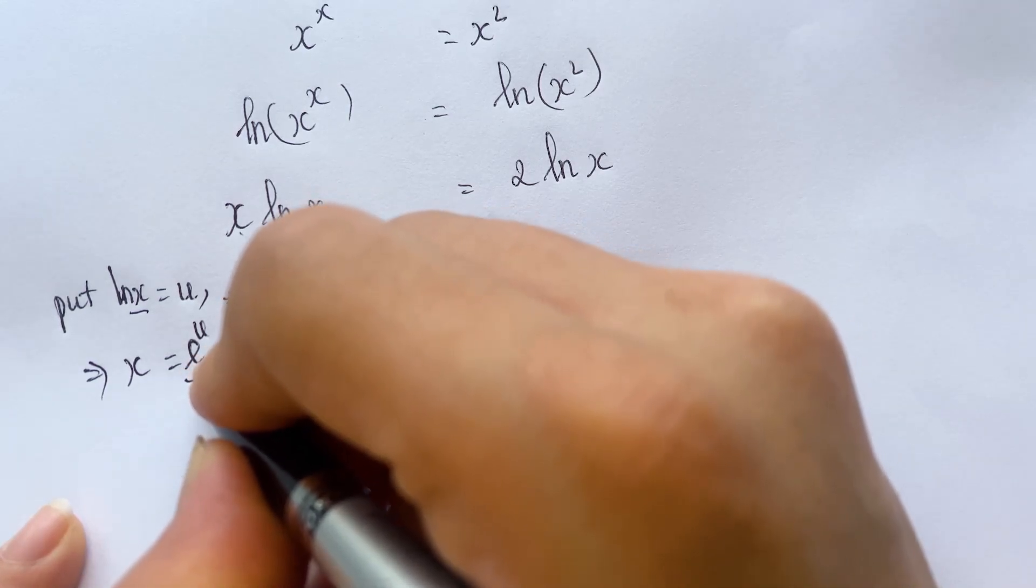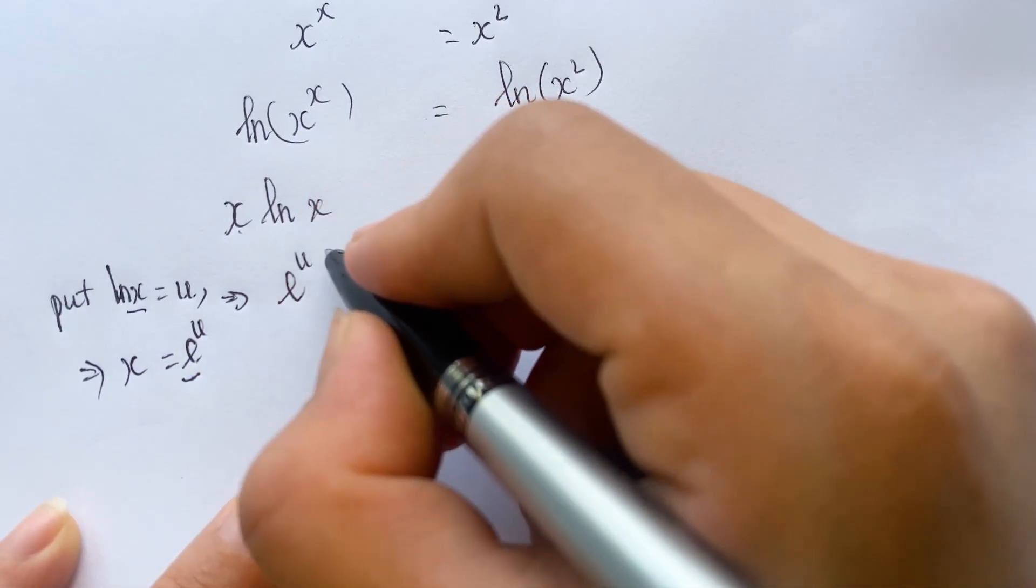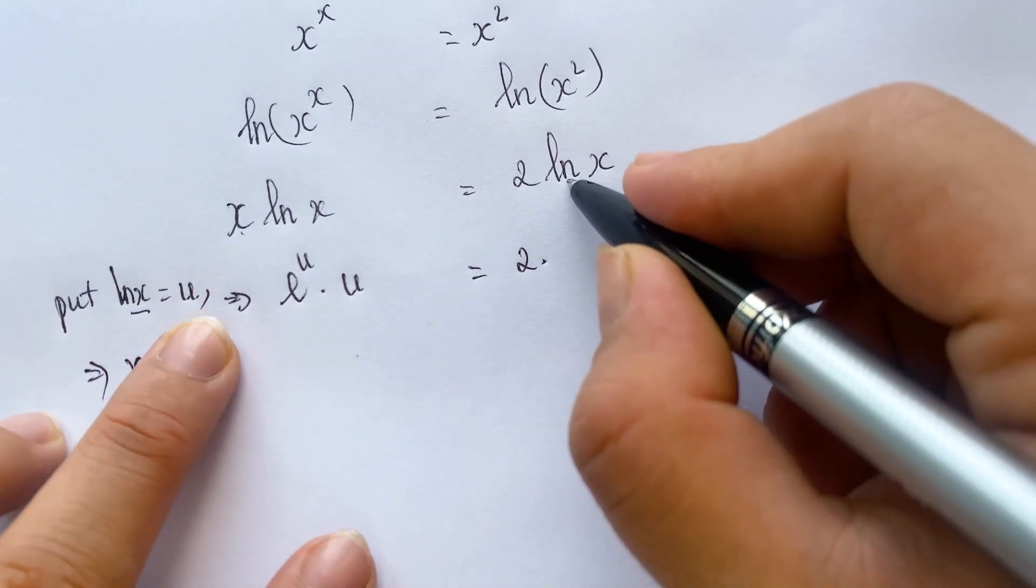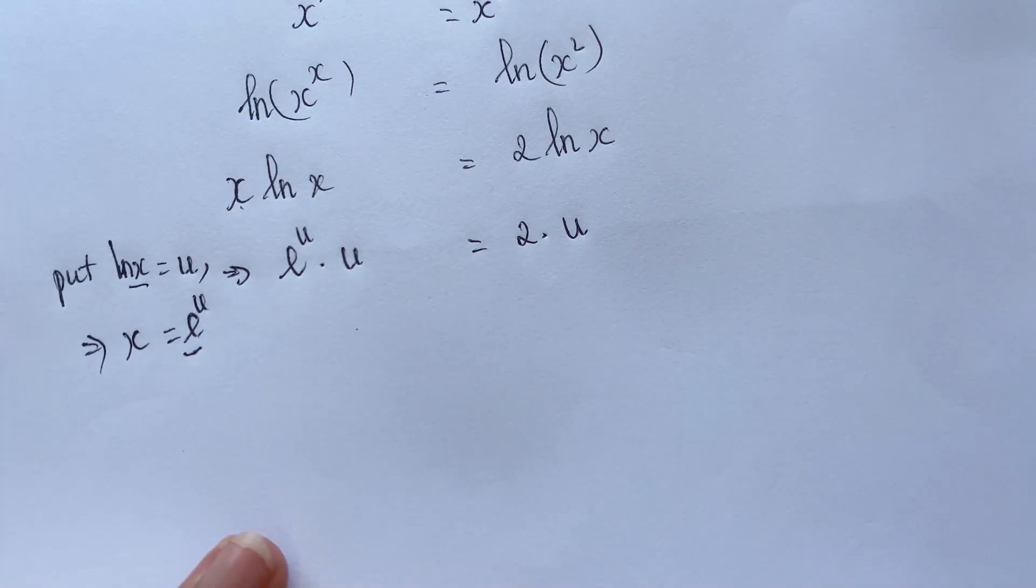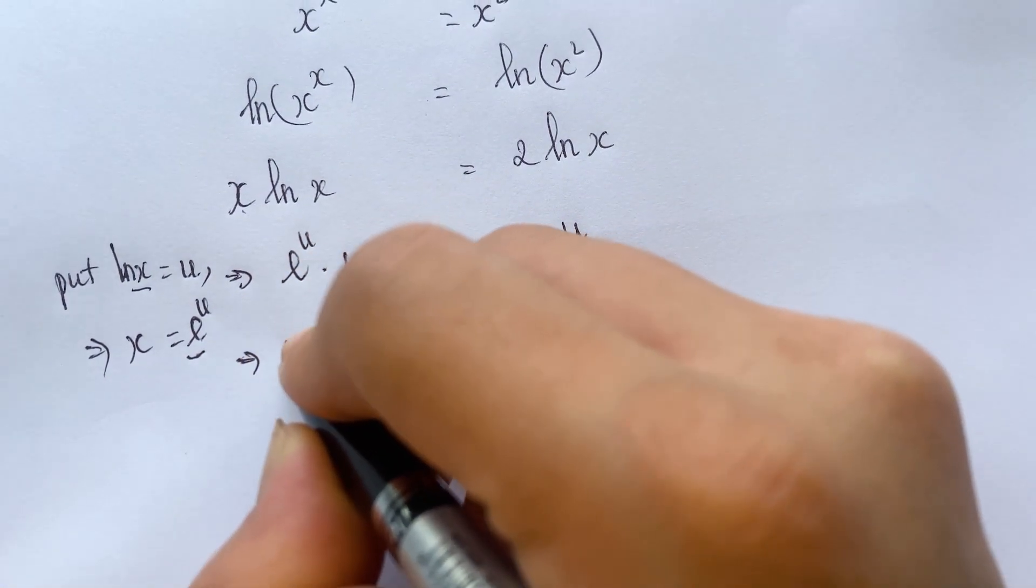x you need to replace by e power u. E power u natural logarithm of x times u equals 2 times u.